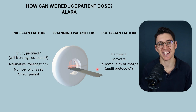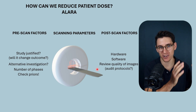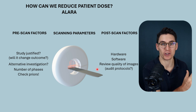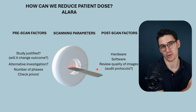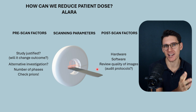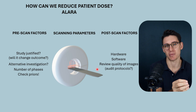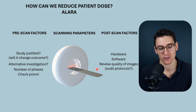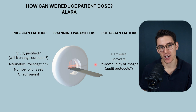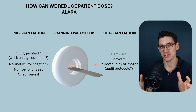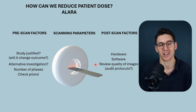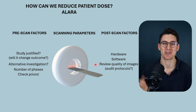That brings us to the end of this Dose in CT module. We've now looked at three separate talks covering what dose is and how it occurs, how we calculate dose and estimate risk, and the factors we can change to reduce patient dose. We're now going to shift gears entirely and look at a type of CT acquisition known as dual energy CT. I'll see you all in that talk — goodbye everybody.